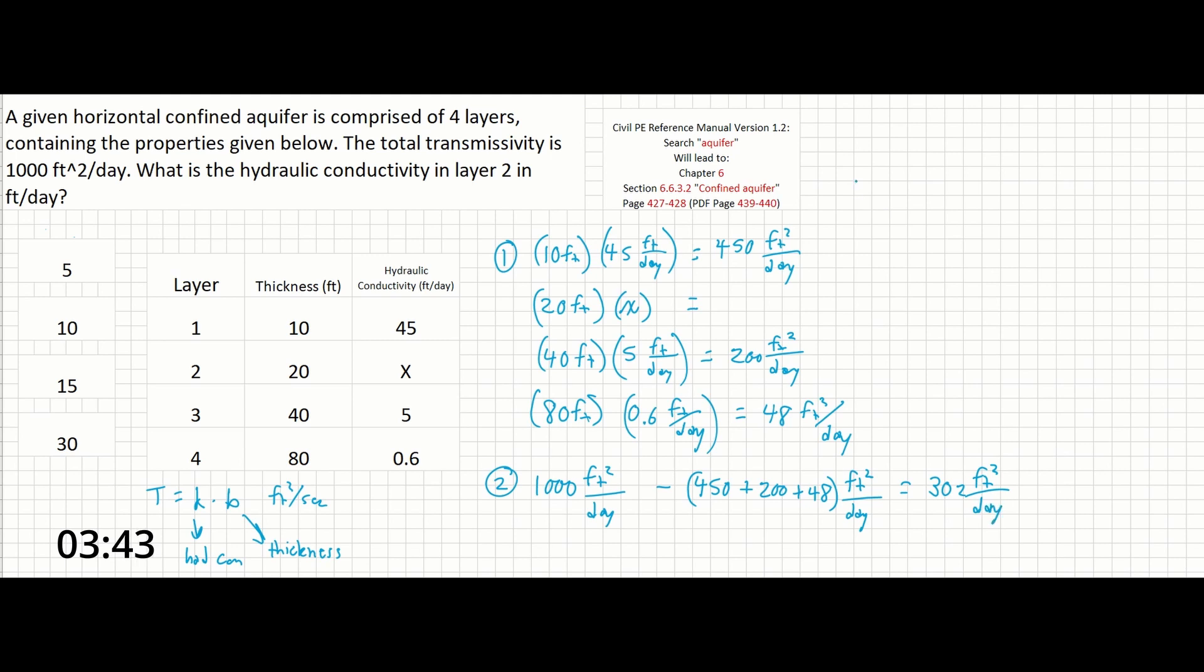Finally with step 3 all we have to do is divide 302 feet squared per day by the unit thickness of the second layer. So 20 feet and that will give us an answer of 15.1 feet per day. So that would be the number over here which we can see is the third answer to our left.